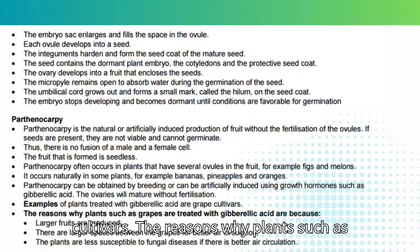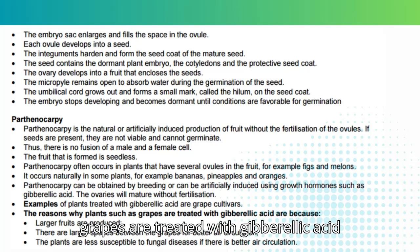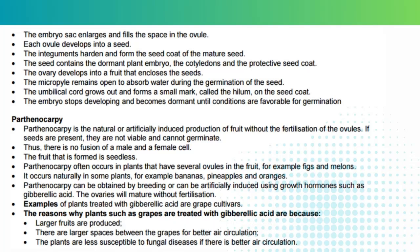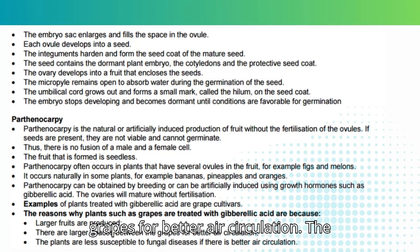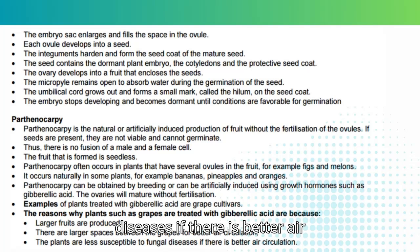The reasons why plants such as grapes are treated with gibberellic acid are: larger fruits are produced, there are larger spaces between the grapes for better air circulation, and the plants are less susceptible to fungal diseases if there is better air circulation.